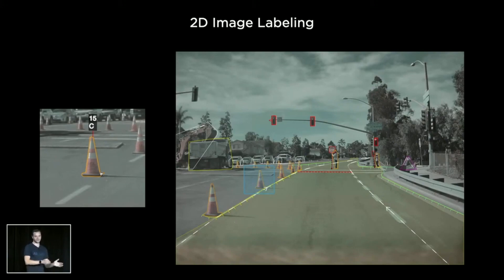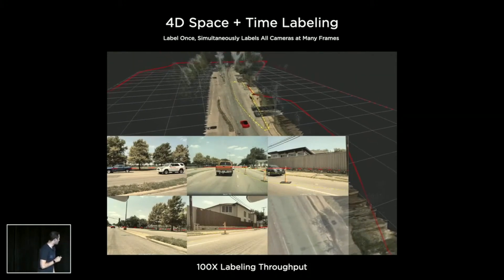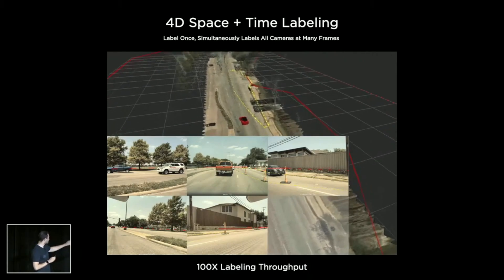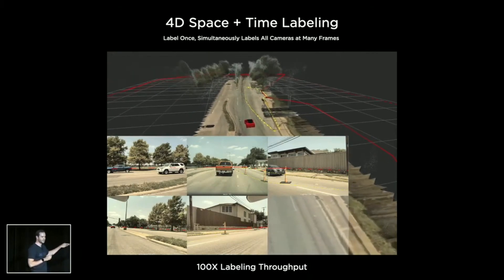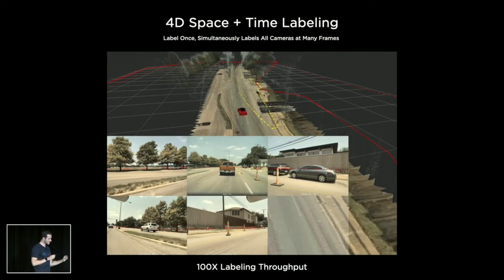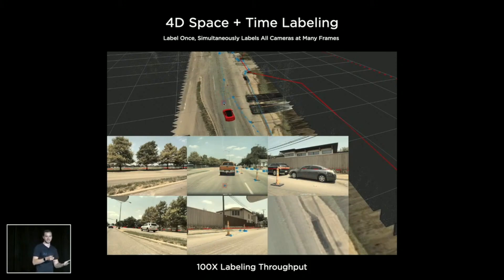Very quickly, we graduated to three-dimensional or four-dimensional labeling, where we are directly labeling in vector space, not in individual images. What I'm showing is a clip — a very small reconstruction of the ground plane on which the car drove, and a little bit of the point cloud that was reconstructed. The labeler is changing labels directly in vector space, and then we are reprojecting those changes into camera images. This gave us a massive increase in throughput for a lot of our labels.